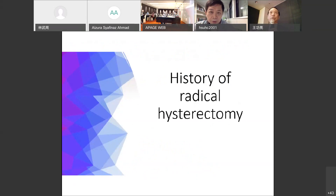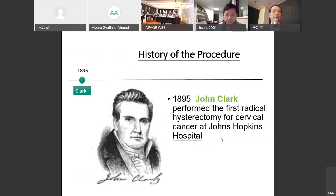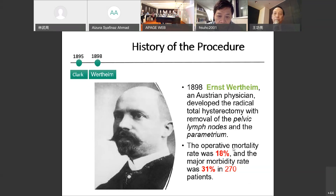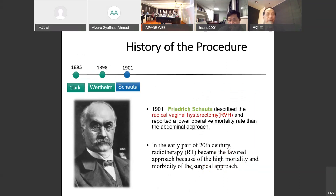First, I'd like to talk about the history of radical hysterectomy. In 1895, John Clark performed the first radical hysterectomy for cervical cancer at Johns Hopkins Hospital. In 1898, Austrian doctor Dr. Wertheim developed the radical total hysterectomy with removal of the pelvic lymph nodes and the parametrium. The point is he just took enlarged lymph nodes, not completely removing all of them. The operative mortality rate was 18 percent and the major morbidity rate was 31 percent in 270 patients.